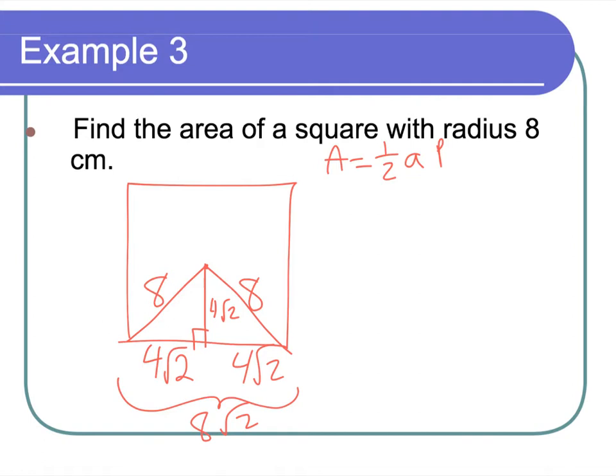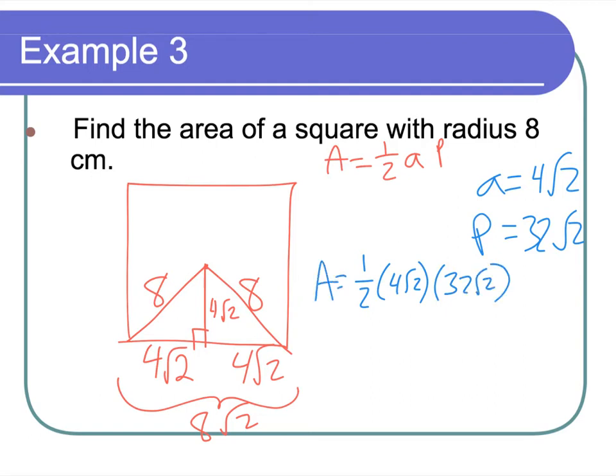And my perimeter is going to be 8 root 2 times 4, so that's 32 root 2. So I'm going to write apothem equals 4 root 2, perimeter equals 32 root 2, and I have to just plug that into my formula now. All right, so 1/2 apothem, perimeter. And what I end up with is basically if I do 4 times 1/2, that's 2, times 32, that's 64, square root of 4, so that's really 128, once I've simplified it, centimeters squared. All right, now, that seemed like a real pain in the butt. All these roots all over the place is just, ugh.